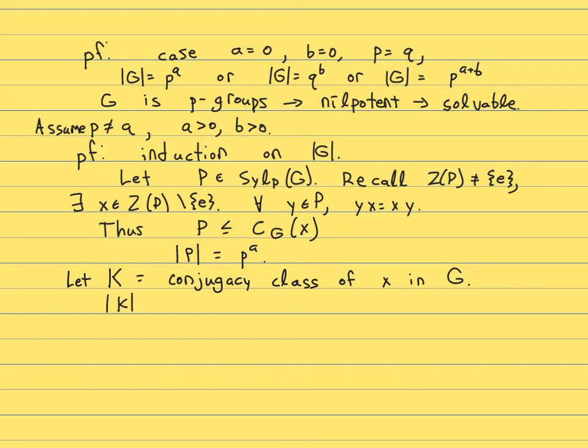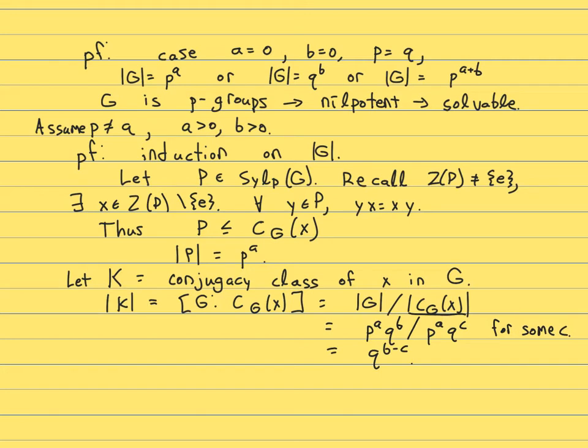Remember, the size of the conjugacy class is the index in G of the centralizer of any element of that conjugacy class, so in particular the index of the centralizer in G of X. What could this thing possibly be? Well, by Lagrange's theorem it's the size of G divided by the size of the centralizer. We know P is a subgroup of the centralizer. So P to the A Q to the B divided by what's downstairs has to be P to the A Q to the C for some C. Q to the B minus C.